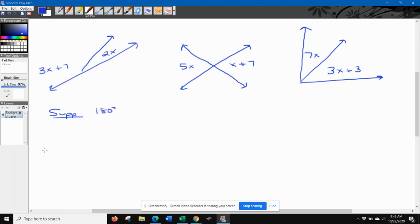And we just write this equation. We take the first angle, which is 3x plus 7, we add it to the second angle, and it totals 180 degrees. Now all you have to do is solve that equation for x.